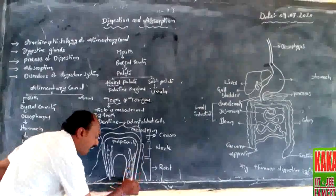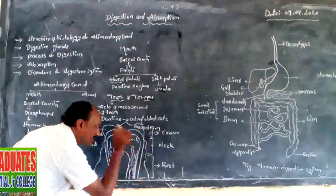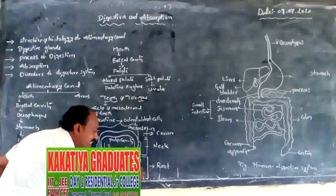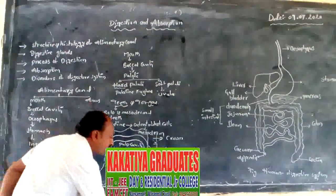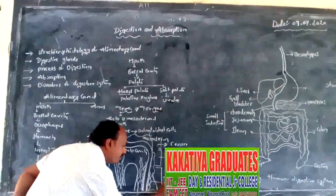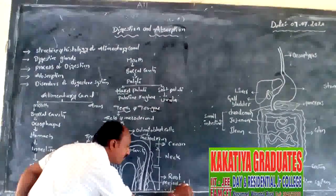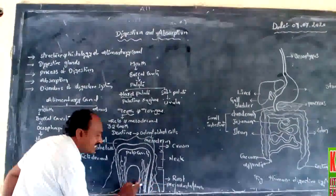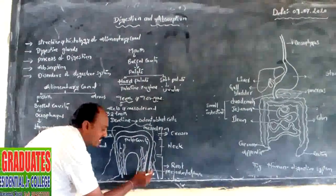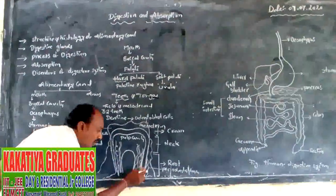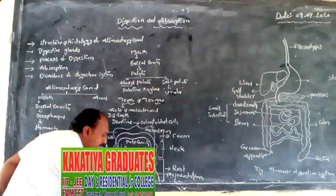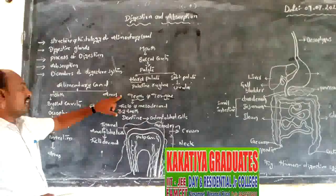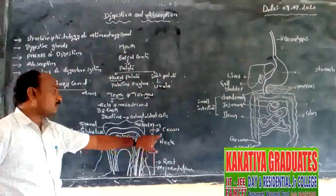Inside the root it is layered by odontoblast cells, followed outside by dentine, then cementum substance, then the periodontal membrane. From outside to inside: periodontal membrane, cementum substance, dentine, and odontoblast cells. This is the structure of the tooth — structurally divided into crown, neck, and root.